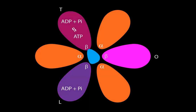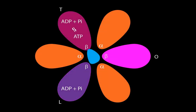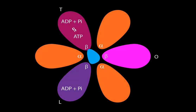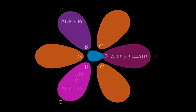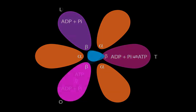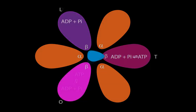Another rotation gets us back to our intermediate where O is to the right and ATP diffuses out, T is to the top left, and L is to the bottom left. The gamma subunit rotates in response to protons being pumped by that C ring. As it rotates, it causes the beta subunits to switch conformations, and it's that switching between different conformations that drives the synthesis of ATP.